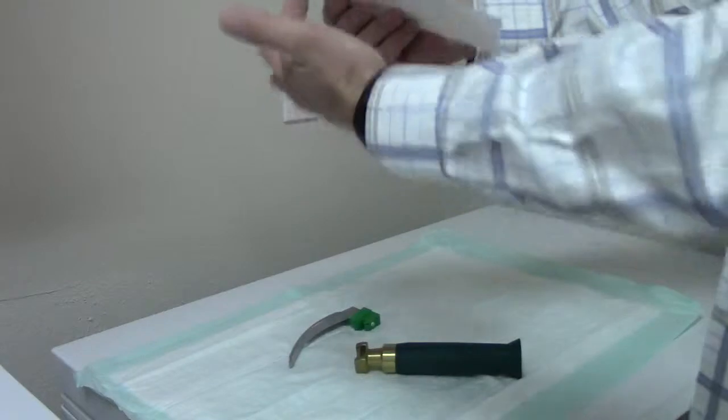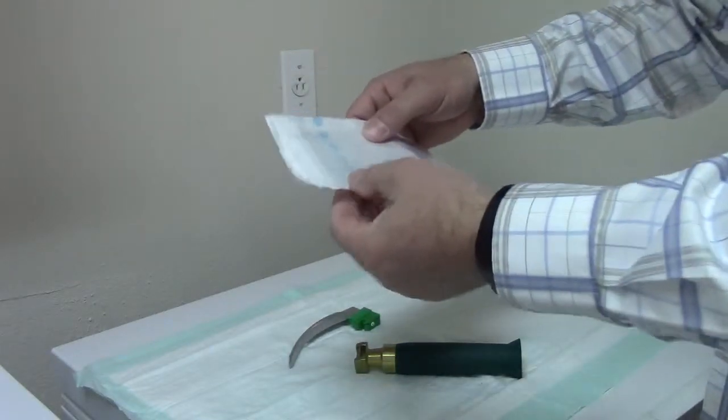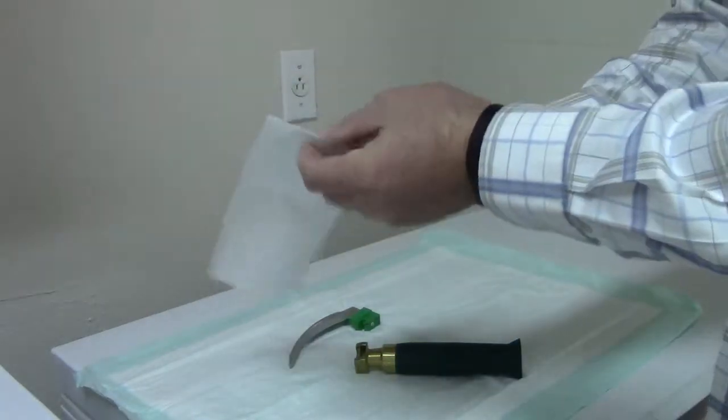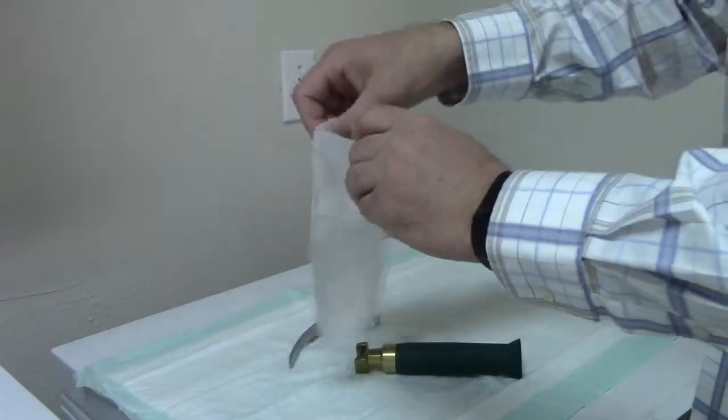It's a bag that has two protective layers on the outside that you can tear away once you're ready to use your handle and blade.